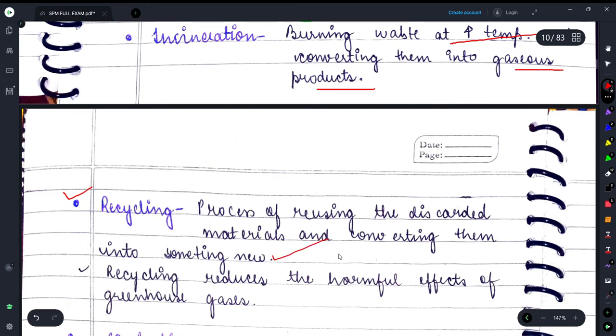Recycling is another process. The process of reusing the discarded materials and converting them into something new. When we recycle some substances, what happens is the waste substances are recycled and converted into other substances.